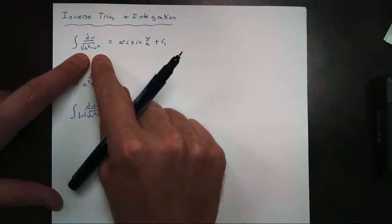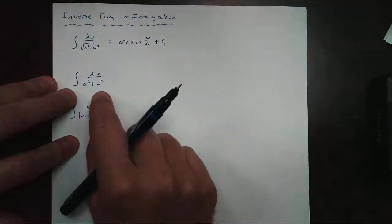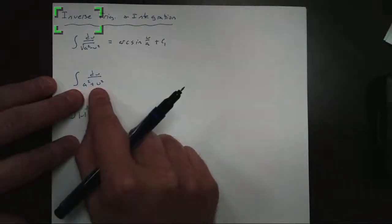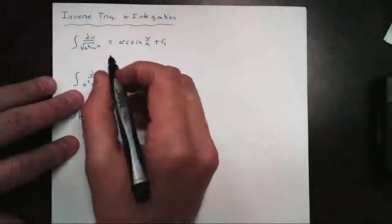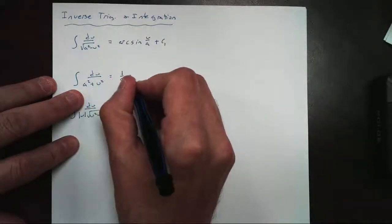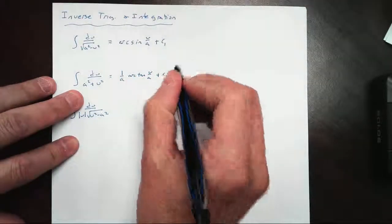Now, yesterday a was always just 1, but today a is going to be a little bit different. Down below here, this is the most recognizable one, this is going to be our arc tangent: 1 over a squared plus u squared. And its antiderivative rule, we get 1 over a arc tangent of u over a plus c.